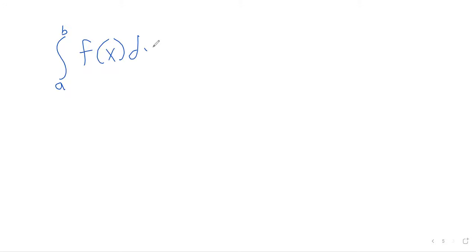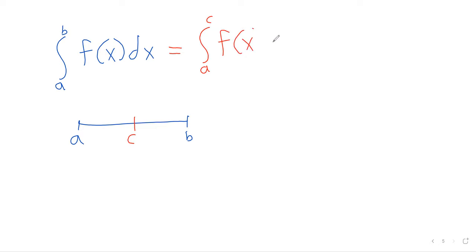The next property is a little more specialized. Suppose we have an integral from A to B of a function. We have a starting point and an ending point, and somewhere between A and B we've got another value C. Then this definite integral is the integral from A to C of f of x dx plus the integral from C to B of f of x dx.